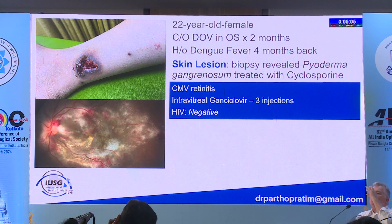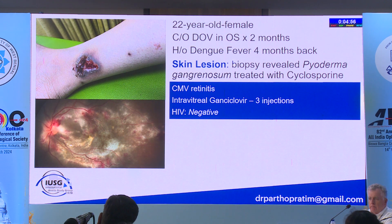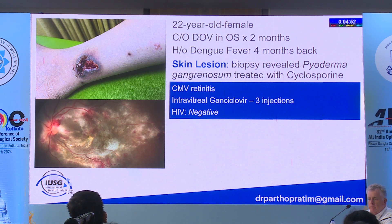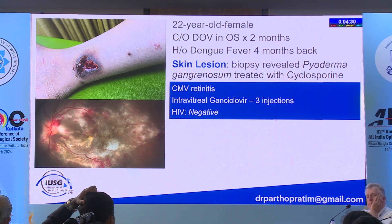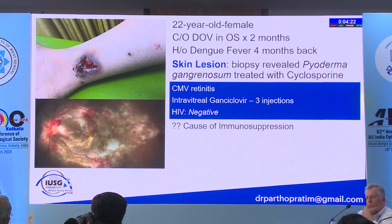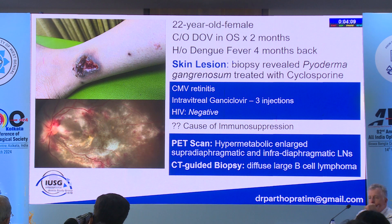I will show a case of a 22-year-old female who presented with a history of dengue fever and developed skin lesions. Biopsy revealed pyoderma gangrenosum, which was treated with cyclosporine. Based on fundus photographs, we diagnosed CMV retinitis, treated with intravitreal ganciclovir, and the retinitis resolved completely. HIV was negative. A subsequent PET scan showed hypermetabolic enlarged supradiaphragmatic lymph nodes, and CT-guided biopsy revealed lymphoma. So CMV retinitis can be a presenting manifestation of lymphoma.